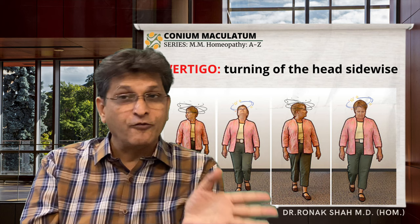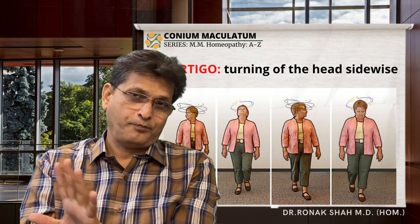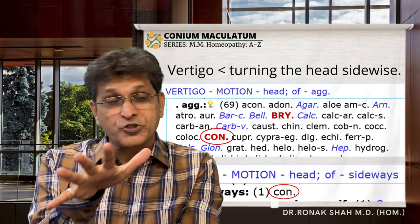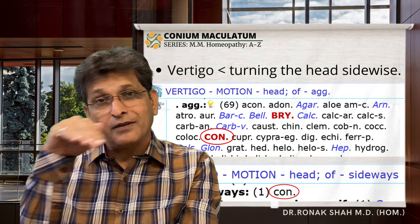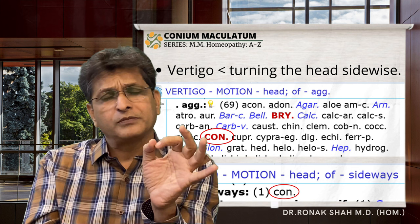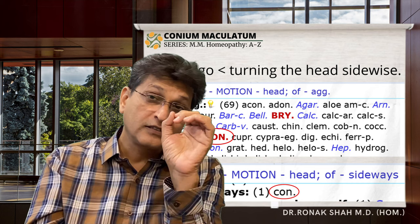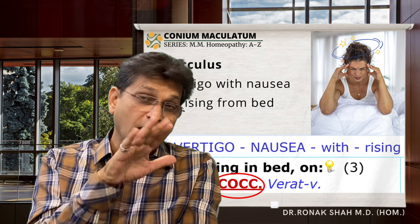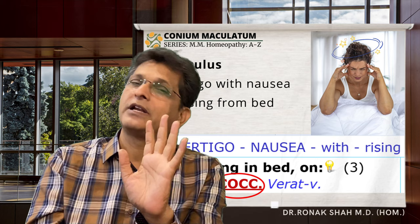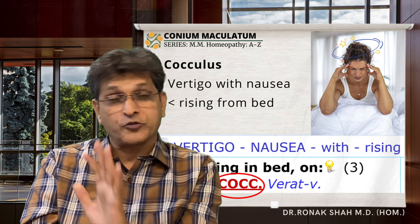Turning over in bed produces the same vertigo. We have the rubric 'vertigo — motion of the head — aggravation' (three marks), and motion sidewise of the head also makes Conium one of the best remedies. I have found it is not so much the lying down as the turning of the head sidewise. Compare with Cocculus — vertigo with nausea aggravated by rising from bed — as mentioned in my Cocculus Materia Medica video.